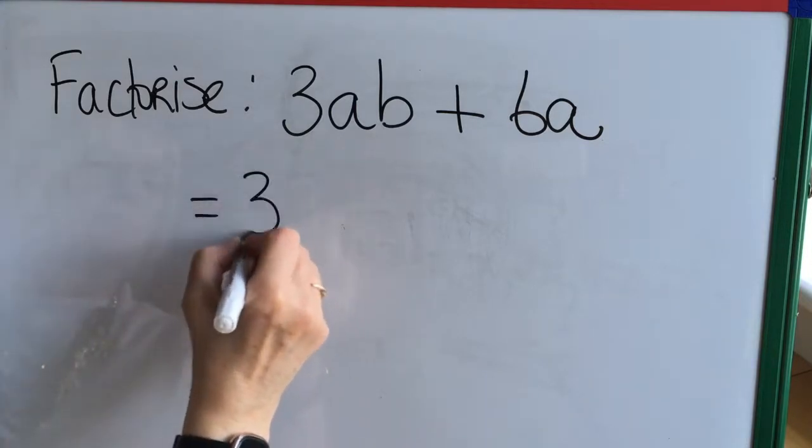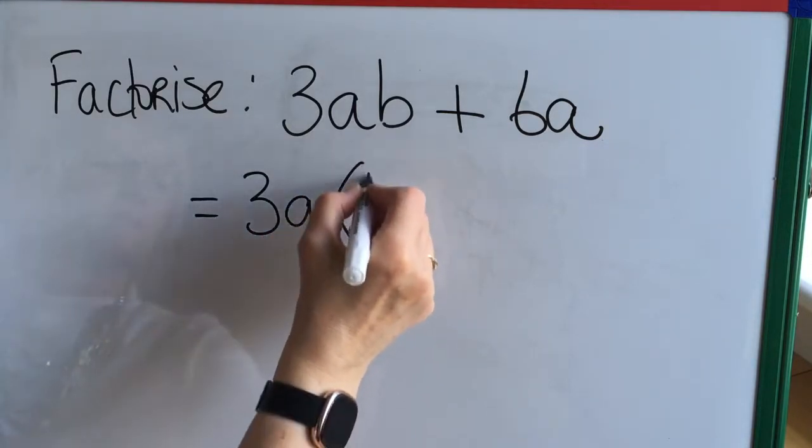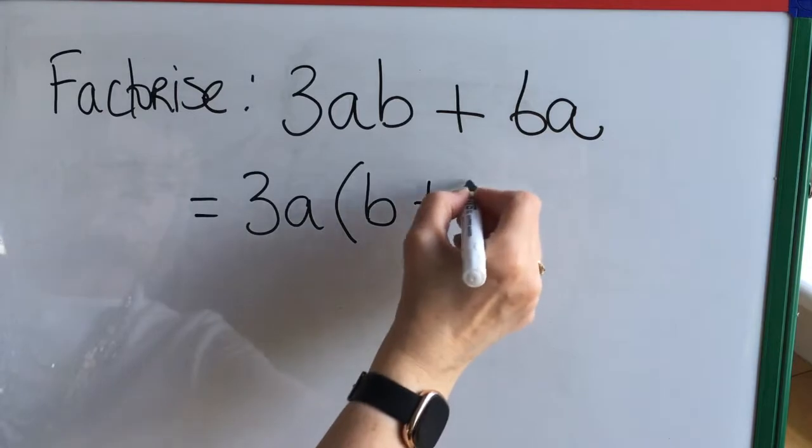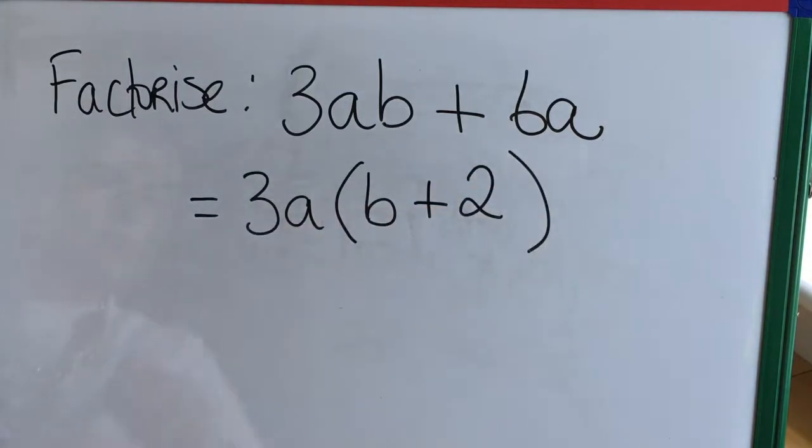3 is the highest common factor here but I also see an a in both terms of the expression. So 3a is the highest common factor and b plus 2 is the other factor.